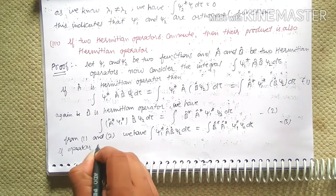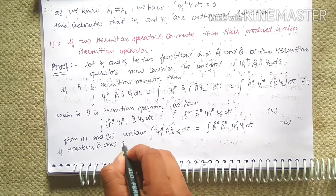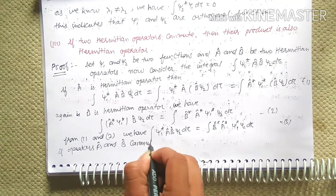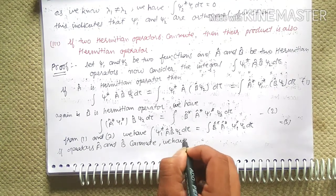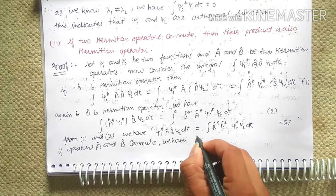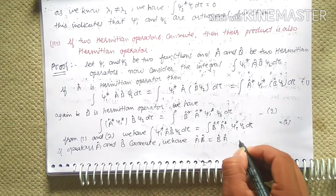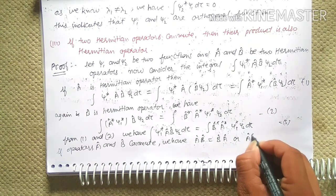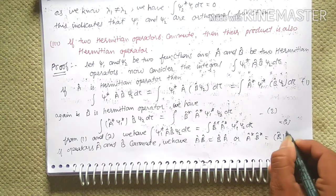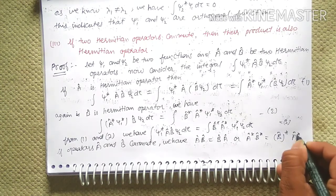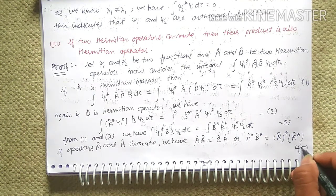If operators A-hat and B-hat commute, we have A-hat B-hat equals B-hat A-hat, or equivalently A-hat* B-hat* equals B-hat* A-hat*, equation four.